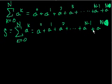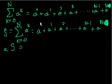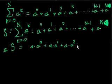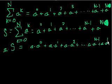So I defined s as this geometric sum. Now I'm going to define another sum, and that sum I'm going to define as a times s. That equals a times this exact sum. So what's a times this whole thing? Well, I just distribute the a: a times a to the 0, plus a times a to the 1, plus a times a squared, all the way to a times a to the n minus 1, plus a times a to the n.